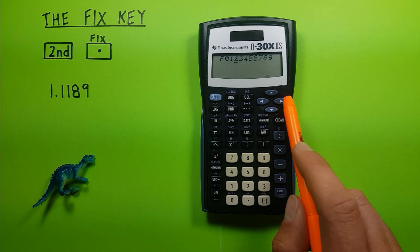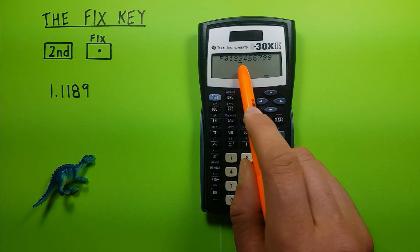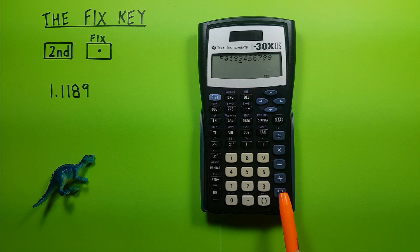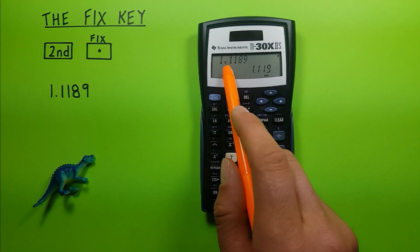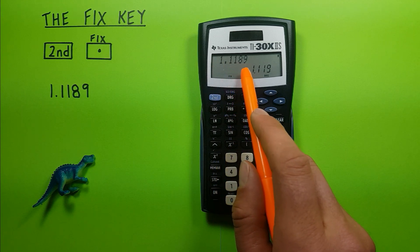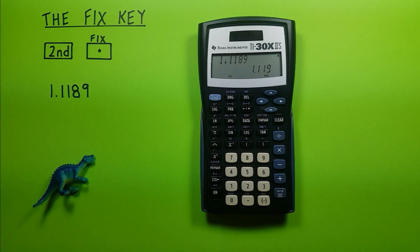So like we said, we said we wanted three decimals so we highlight the three, press enter, and we see now our number has been rounded from 1.1189 to 1.119. That 8 has been rounded up to a 9.